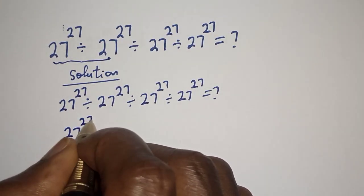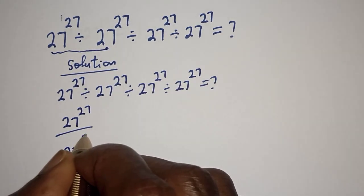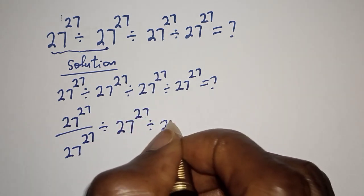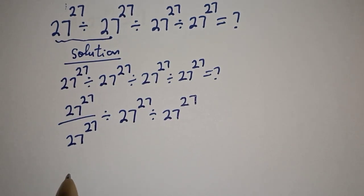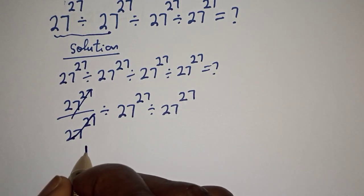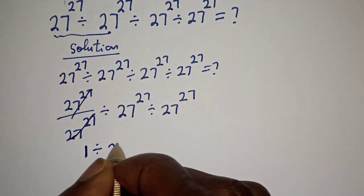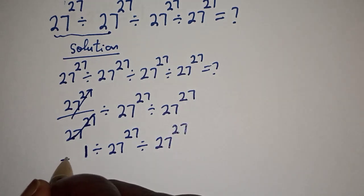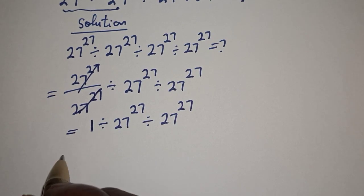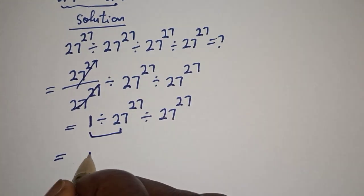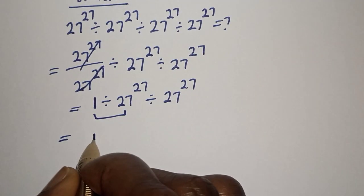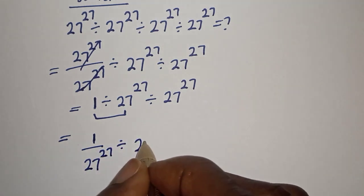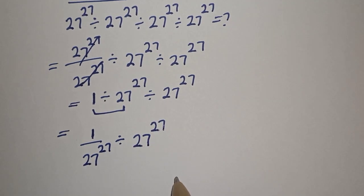This will cancel this one, divided by 27 raised to power 27, divided by 27 raised to power 27. Let's work with the first two again: one over 27 raised to power 27 divided by 27 raised to power 27.